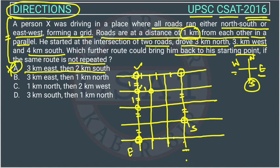Now we will check option B: three kilometers east and then one kilometer north. Three kilometers east will bring him here, and then one kilometer north — he will go upward on this side. So he will reach at the starting point. The option B is correct and option B will be the answer.